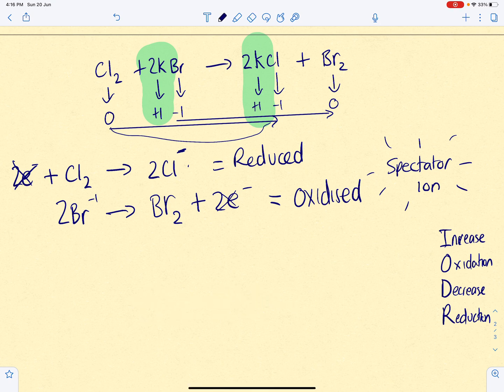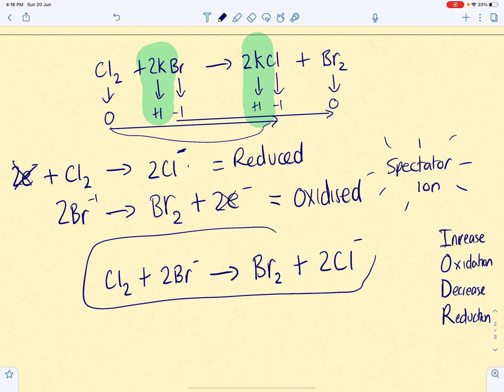So, now, shall we put them together and make a full ionic equation? Remember, we don't include spectator ions, so we can forget about the potassium now. We've got everything on this side. Chlorine as an element plus two bromine ions make bromine as an element plus two chlorine ions. That, ladies and gentlemen, is your full ionic equation. And this was the spectator ion, the potassium, so we didn't include it. Hope that helped.